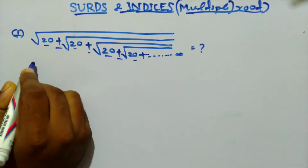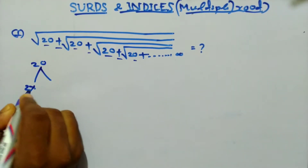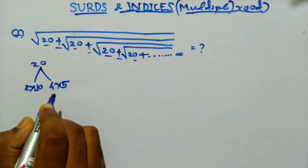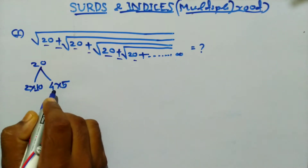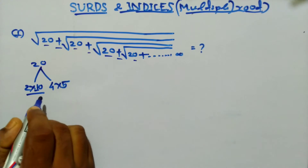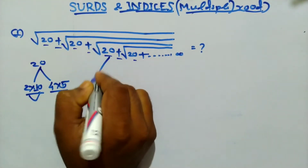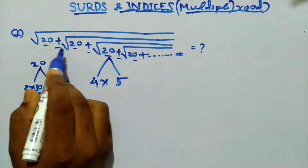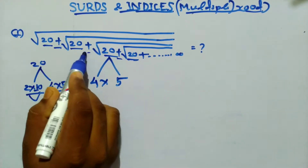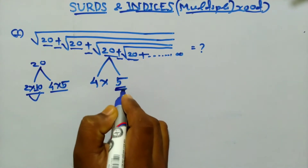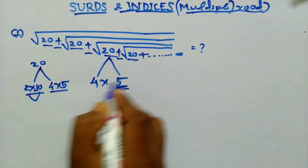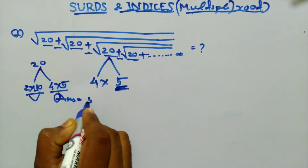Find the consecutive number. 20 you can write as 2 into 10, or 4 into 5. Consecutive number means numbers that come serially. Here you can see 2 into 10 is not a consecutive number, but 4 into 5 is a consecutive pair. So 20 equals 4 into 5. When all the numbers and signs are positive, the answer is the greater consecutive number. Here 5 is greater than 4, so the answer is 5.